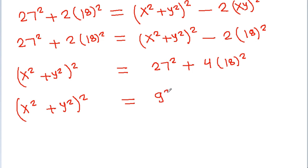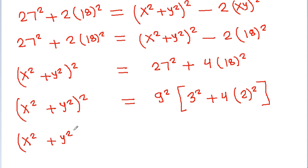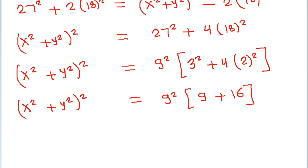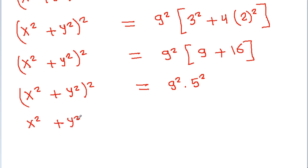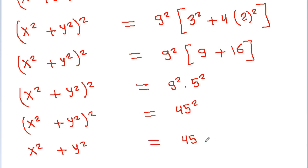We take 9 squared common and get 3 squared plus 4 times 2 squared. So x squared plus y squared, squared, equals 9 squared times 3 squared, which is 9, plus 4 times 4, which is 16. That gives 9 squared times 25, which is 9 squared times 5 squared, equal to 45 squared.